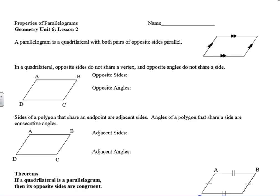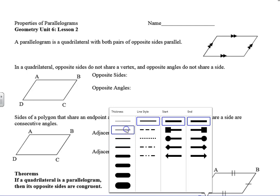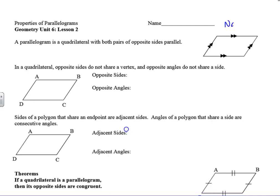So today we're going to be looking at the properties of parallelograms. A parallelogram is a quadrilateral with both pairs of opposite sides parallel. Notice over here this notation — those little triangles — indicates parallel.